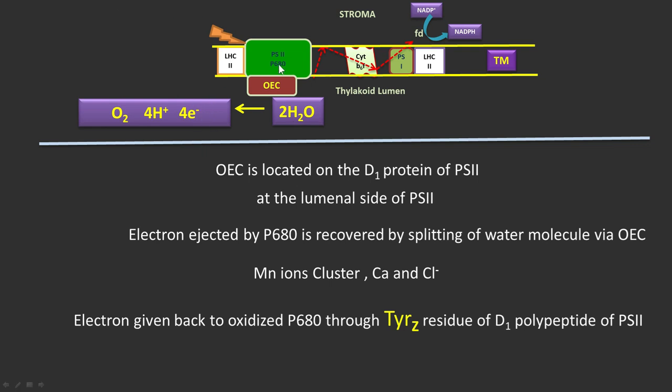Electrons which are produced by the photolysis of water are not given back to P680 directly but through an important amino acid residue of D1 protein that is known as tyrosine residue.